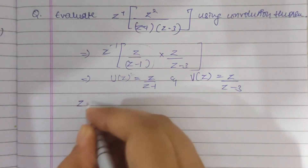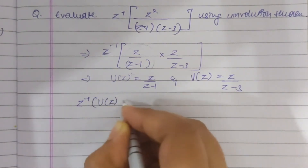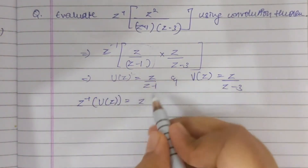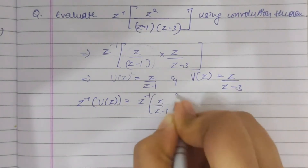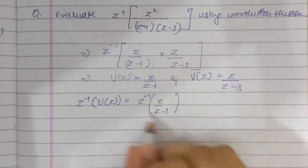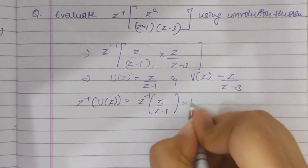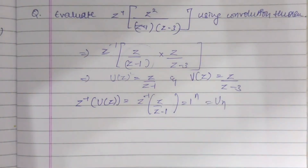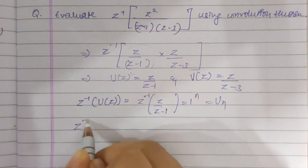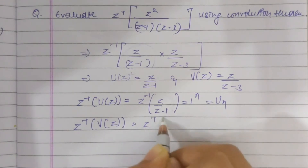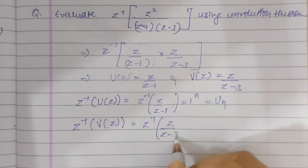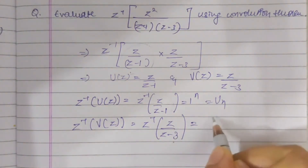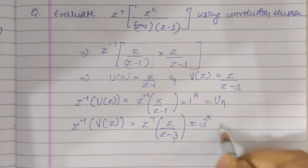Now we'll find them individually. Z⁻¹ of U(z) equals Z⁻¹[z/(z−1)], which we have seen before — this is nothing but 1ⁿ, so that's equal to u(n). And Z⁻¹ of V(z) equals Z⁻¹[z/(z−3)], which is aⁿ where a is 3, so 3ⁿ — that is our v(n).